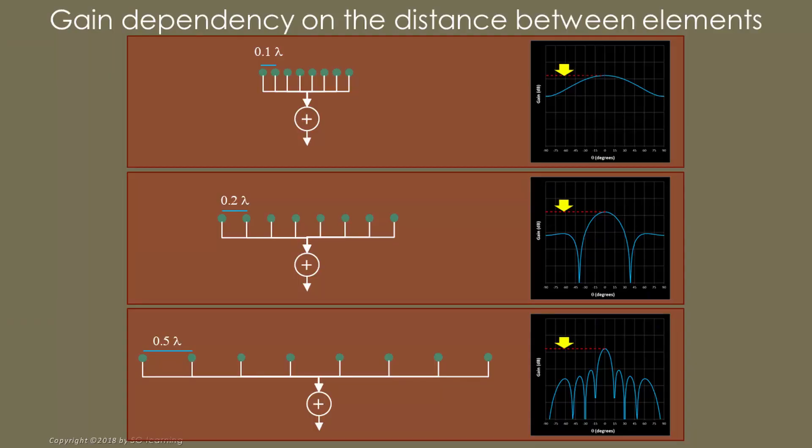In summary, as the inter-element distance increases, the maximum array gain does not change, but the main lobe width becomes narrower, therefore increasing the array directivity.